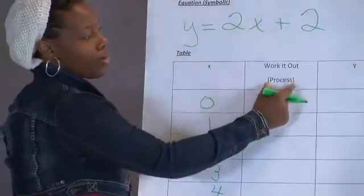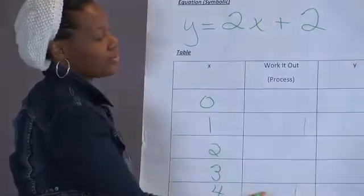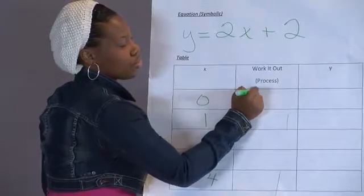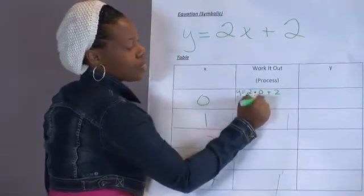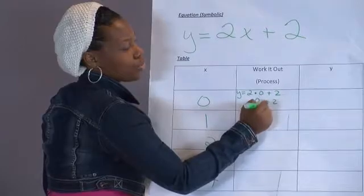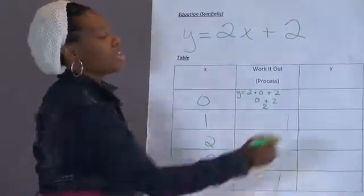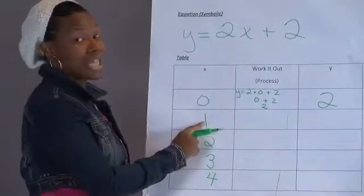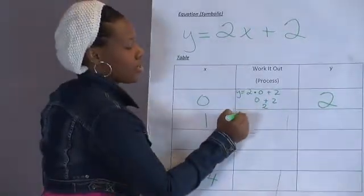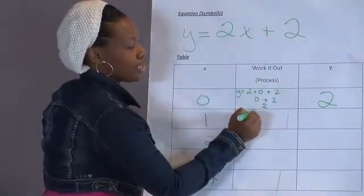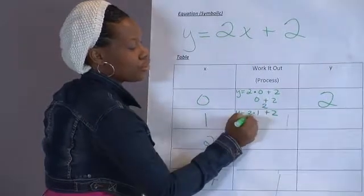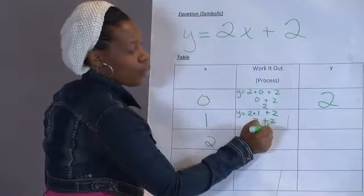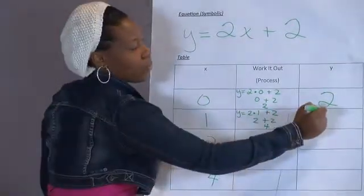I'm going to work it out in what's called my process column. So y equals 2 times 0 plus 2 is 0 plus 2, which equals 2. So I'm going to put a 2 in the y column. Real simple. Let's do the same thing for 1. Y equals 2 times 1 plus 2. 2 times 1 is 2. 2 plus 2 is 4. So when x is 1, y is 4.